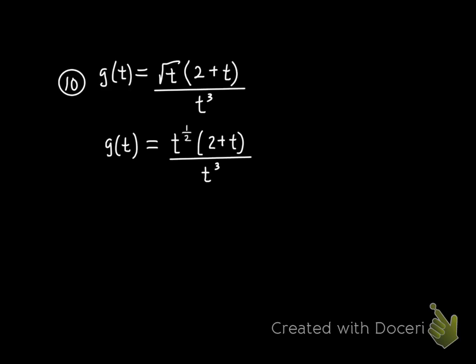Again, this is g of t equals root t times 2 plus t, root t times quantity 2 plus t, all over t cubed. First step, ask her out, treat her like a lady. I write that root t as t to the 1 half. Second step, tell her she's the one you're dreaming of. Do the distributive property here. So take that t to the 1 half power and distribute it to both terms in the quantity. You've got a new function that looks like this.